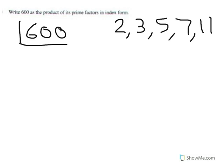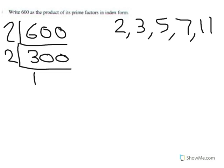I'm going to try 2. 2 will go into this. So divide that by 2, I get 300. 300 is an even number. I can divide it by 2 again. That's 150. I can divide 150 by 2 because it's an even number. That'll get me 75.